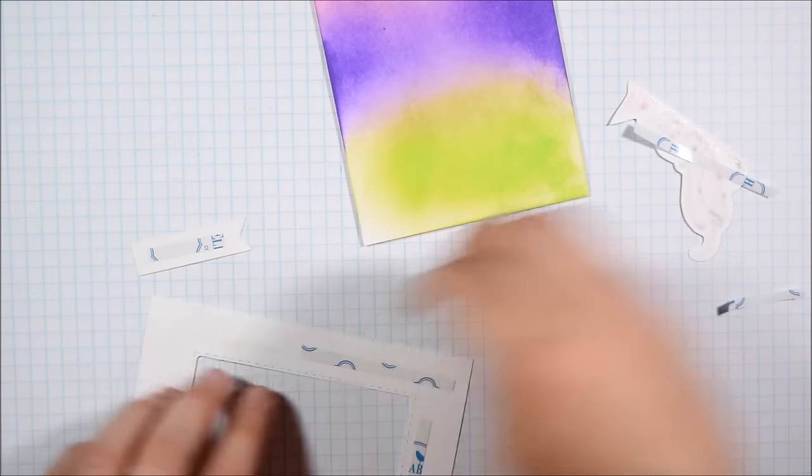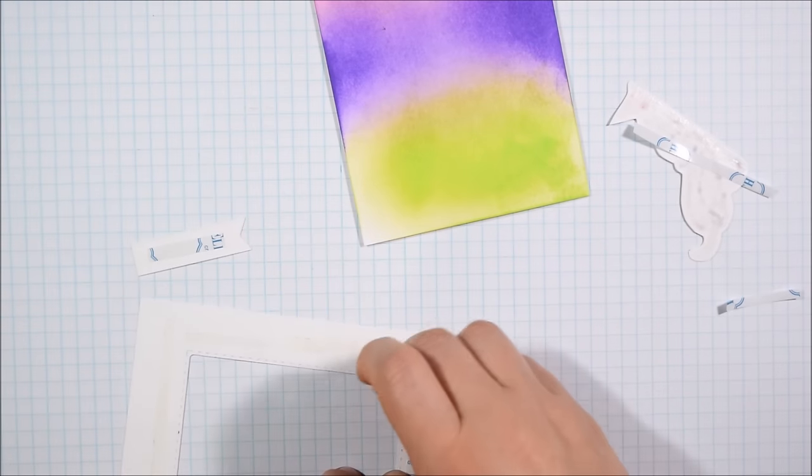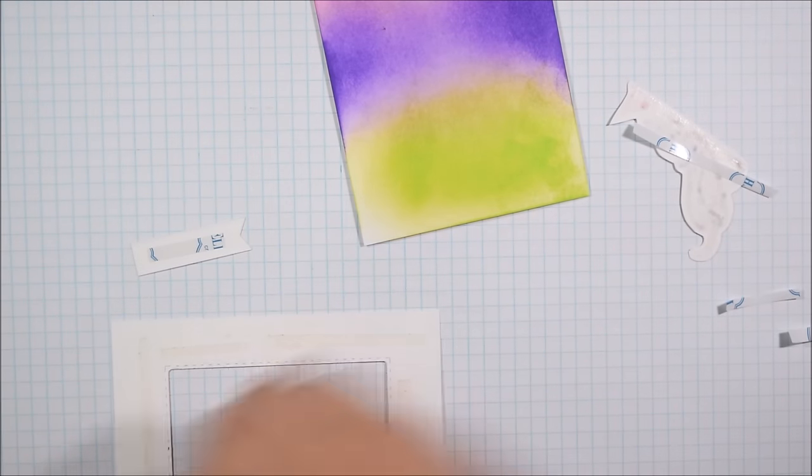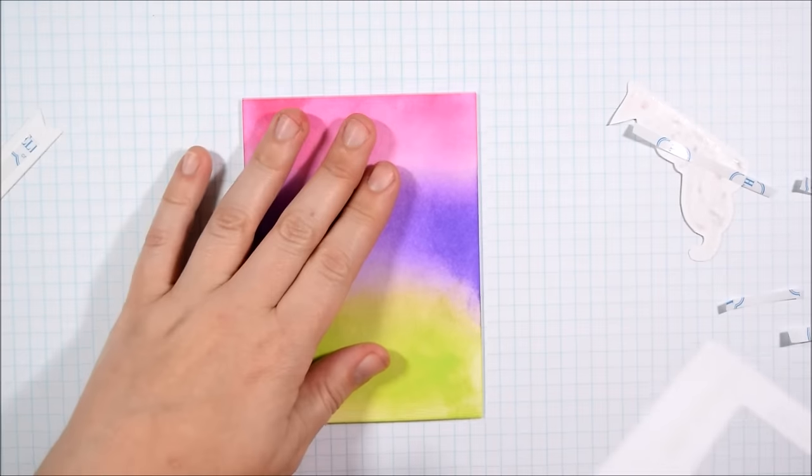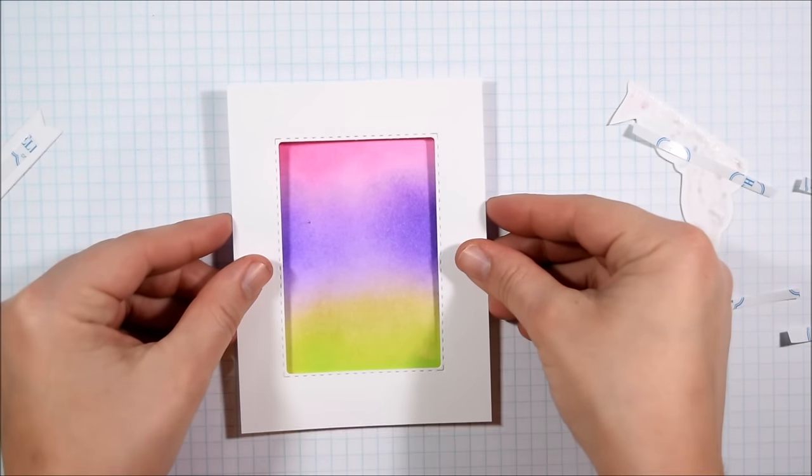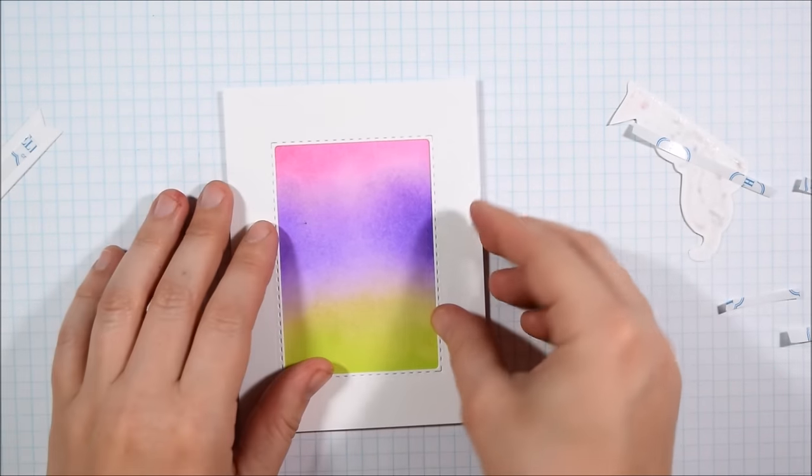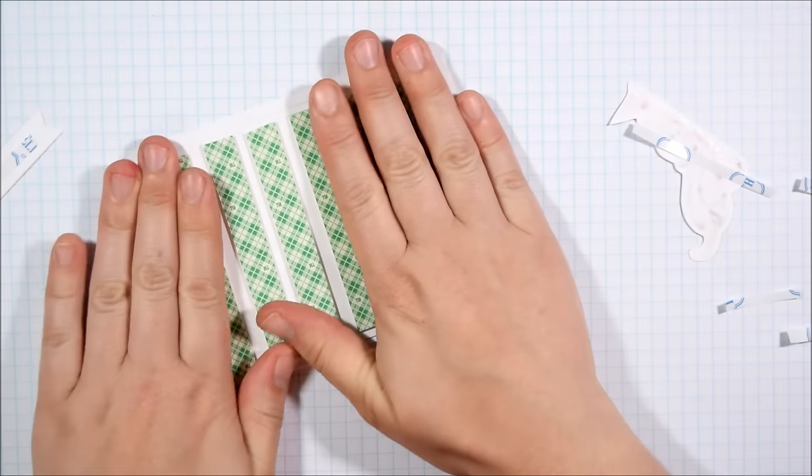Once I had that colored, like I said before, I fussy cut it out. I like to use the EK Success Non-Stick Trimmer or Scissors. They work really well for fine detail areas. And then even if you have adhesive on the back of your image already, you don't have to worry about that.